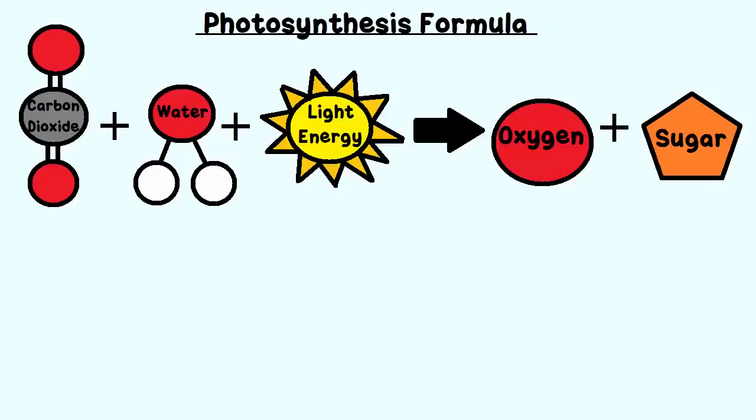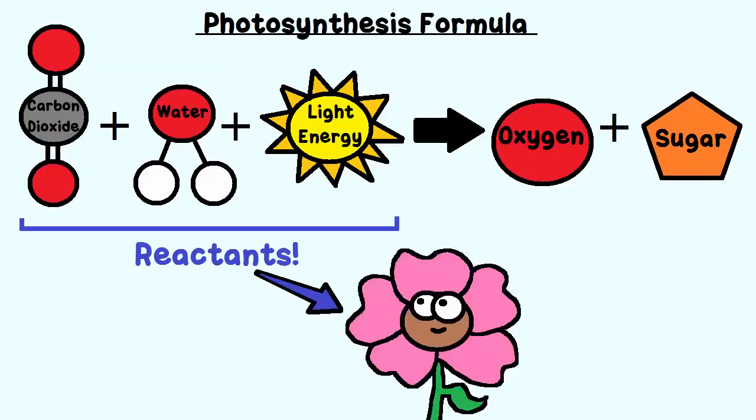Here is the formula for photosynthesis. On the left side of the formula, you will find the reactants. That means these are the inputs. The plant has to have these in order to do photosynthesis.